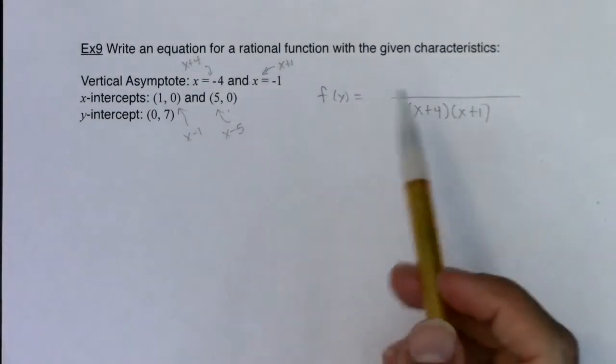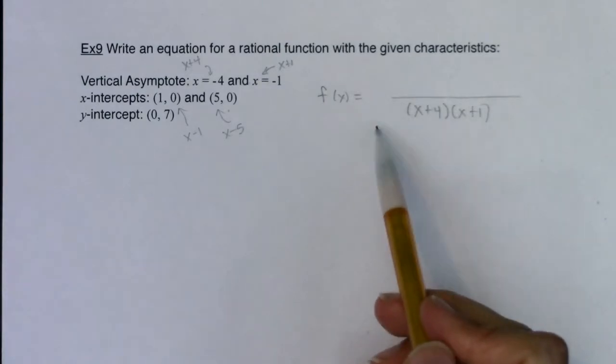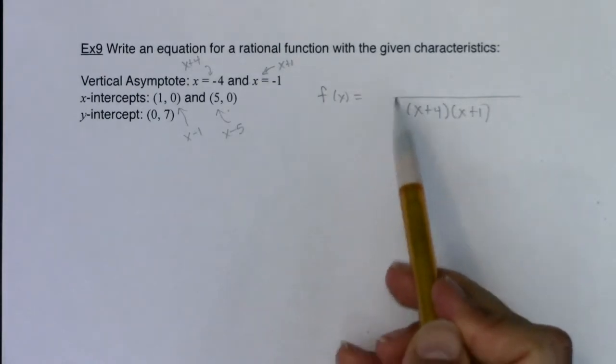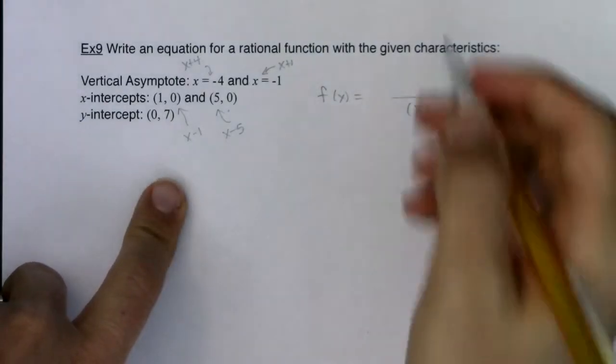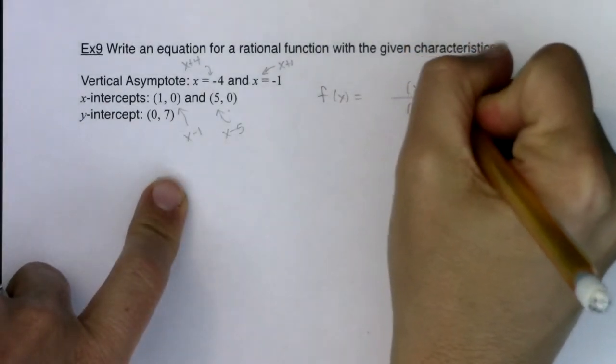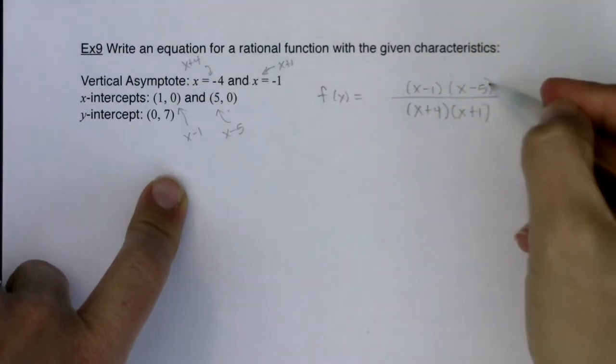Now where do x-intercepts occur? Do they occur when only your numerator zeroes out, only your denominator zeroes out, or where both numerator and denominator zero out? And x-intercepts, they occur when only your numerator zeroes out. So these factors are going to show up on the numerator and only the numerator.